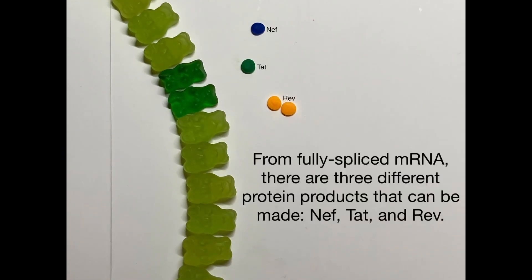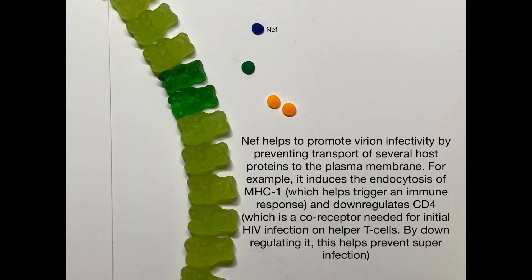The protein products made from fully spliced HIV mRNA are NEF, REV, and TAT. NEF helps promote virion infectivity by preventing the transport of several host proteins to the plasma membrane. For example, it induces endocytosis of MHC-I, a cell surface protein that displays peptide fragments to cytotoxic T cells to trigger an immune response — so when MHC-I is unavailable, the immune system does not know a cell is under attack. NEF also downregulates CD4, a co-receptor needed for initiating HIV infection, helping to prevent superinfection so that HIV doesn't kill its host too quickly.